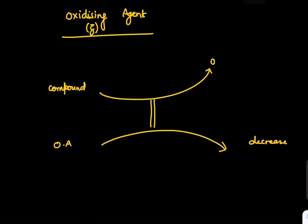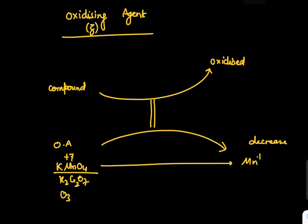Examples: KMnO4 is an oxidizing agent, K2Cr2O7 is an oxidizing agent, ozone is an oxidizing agent. When you take KMnO4, this is +7, and it can go to Mn+2 in acidic medium. Similarly, in basic and neutral medium it goes to +6 and +4. So drop of 5, 1, and 3 is observed.